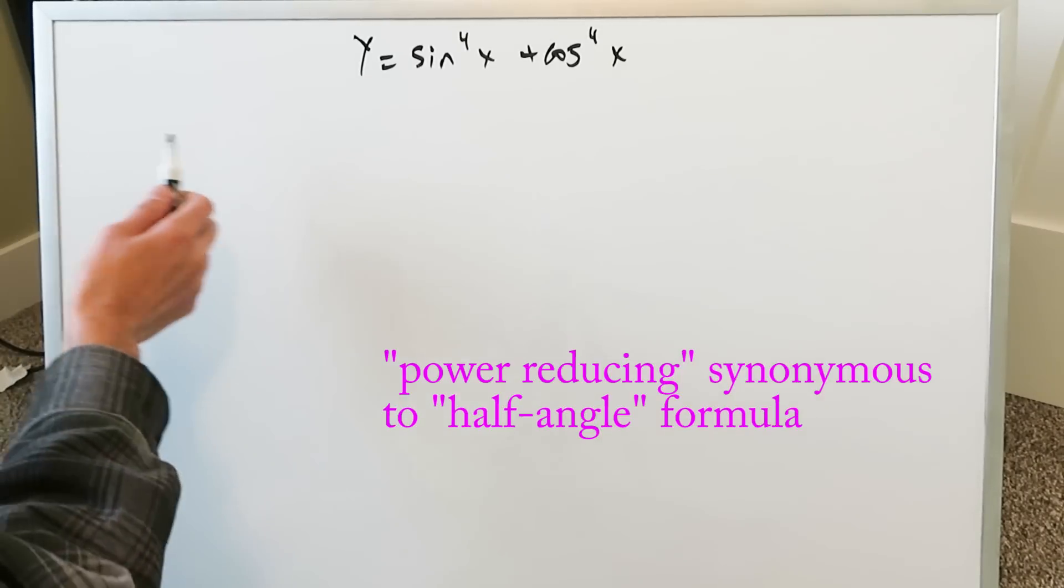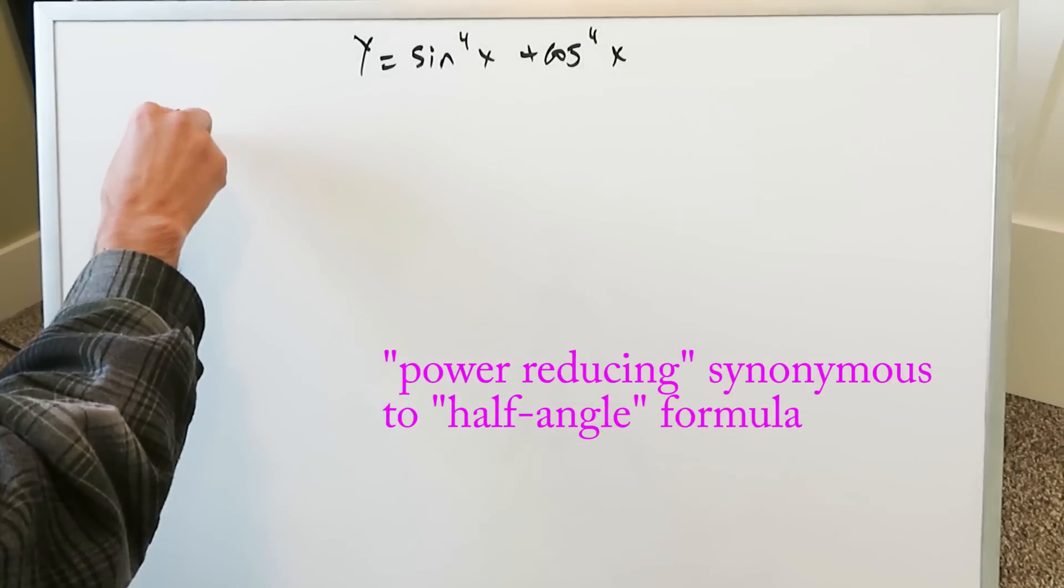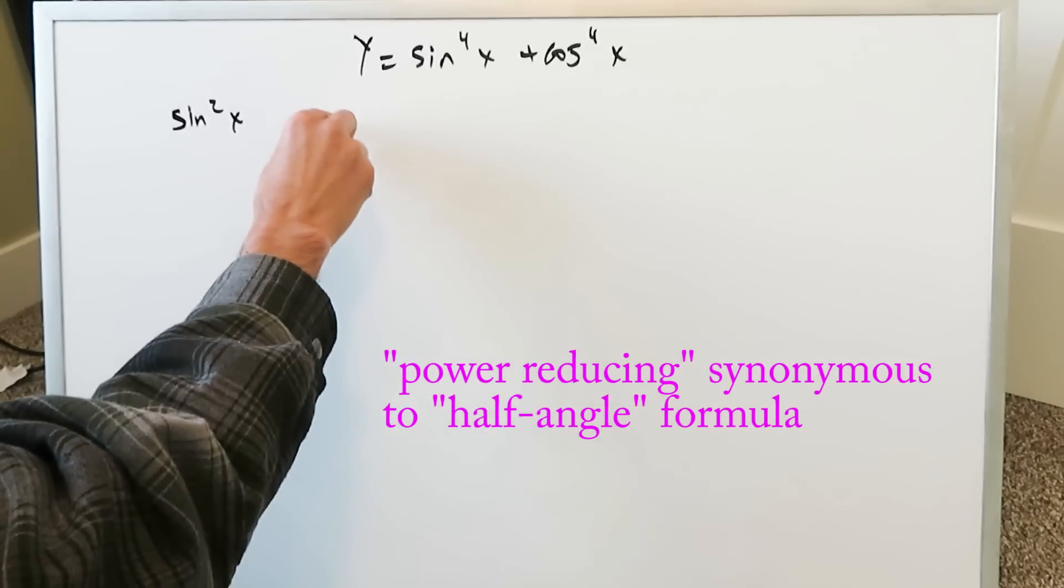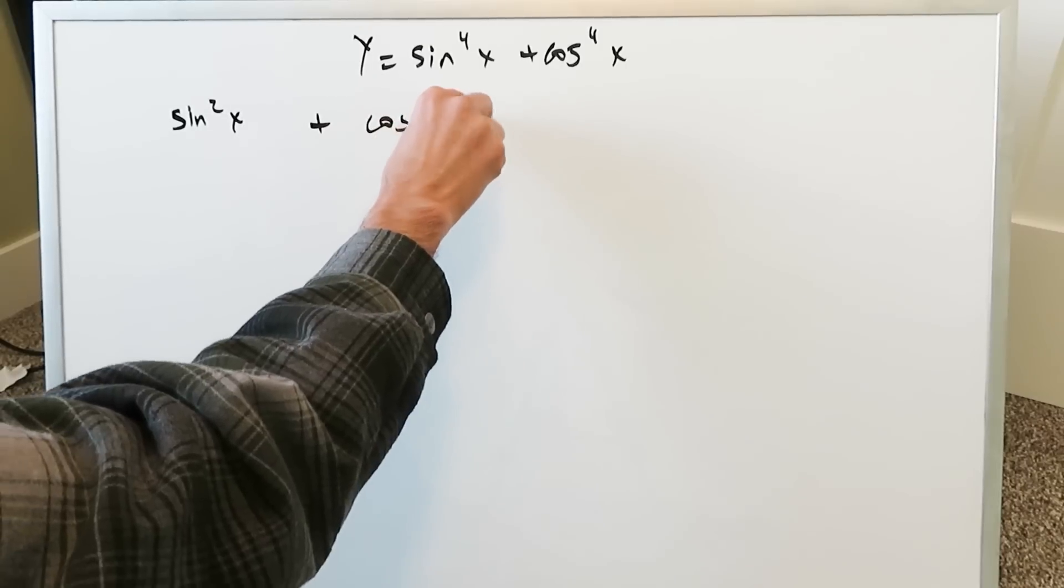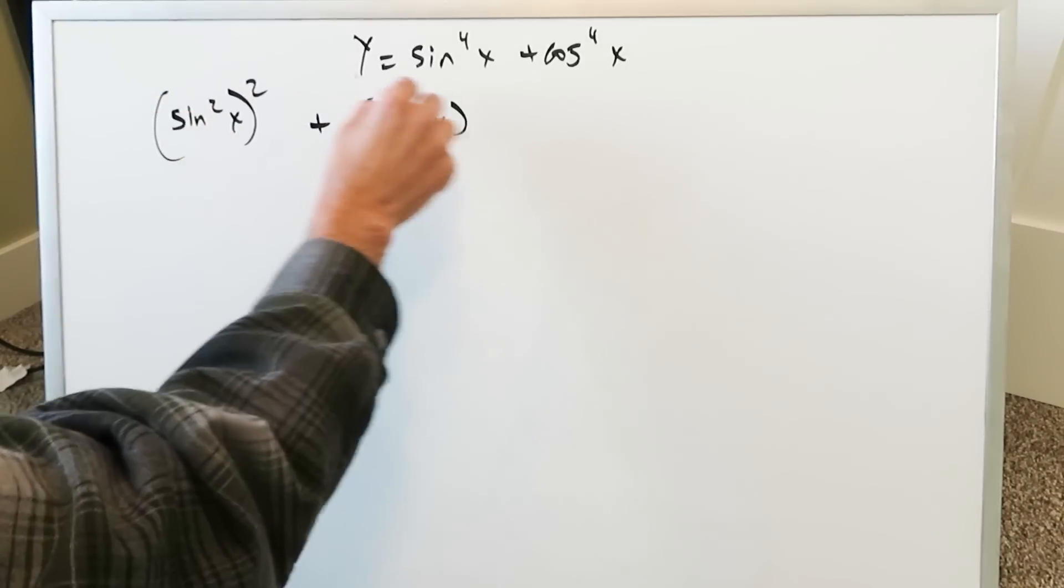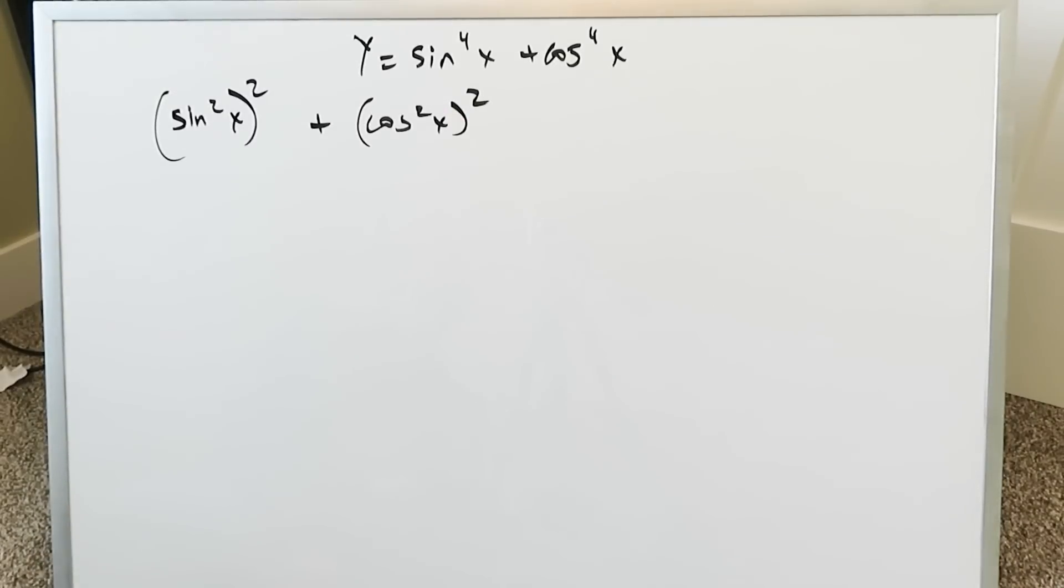I would be thinking about a power reducing formula where I know sine square x and cosine square x can be reduced by means of that power reducing formula and that's exactly what I have. I'm just removing this y equals part because I know y equals everything that I'm going to show you.